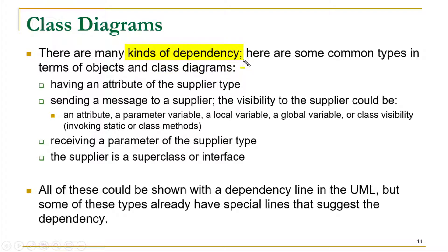Whenever we are working with objects and classes, there are chances that we are dealing with different types of dependencies. The possible types include: a class having an attribute of the supplier type — here the supplier is another class — meaning we have an attribute of one class in another class. For example, we can have an attribute of page in the book class. Another possibility is when one class is calling or sending a message to another class, where the method can be called with the help of an attribute or a parameter variable.